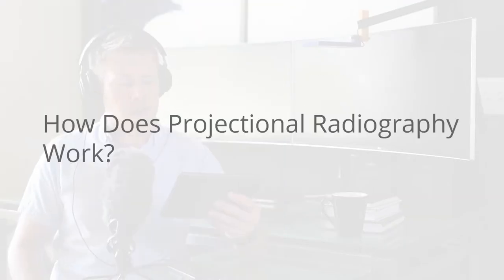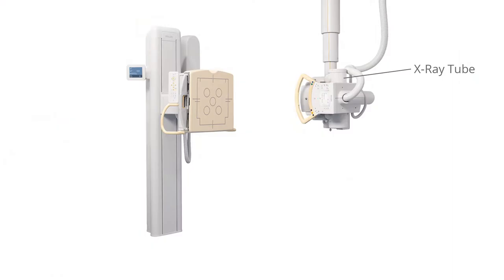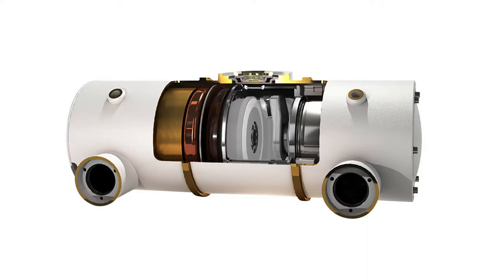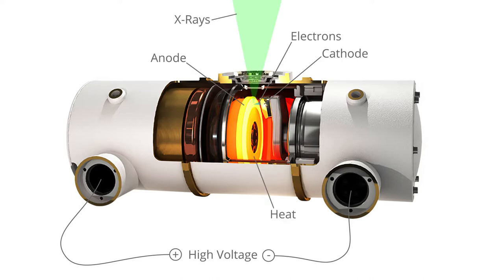A typical projectional radiography system consists of the following main components. The x-ray tube is what produces the x-rays. It is a vacuum tube which applies a high voltage to accelerate electrons released from a hot cathode to an extremely high velocity. These high energy electrons collide with a metal anode producing x-rays.